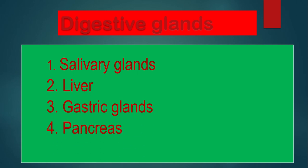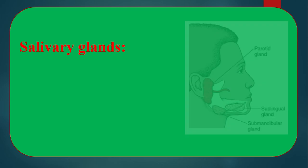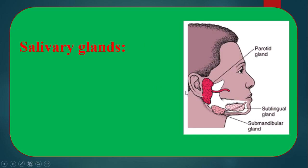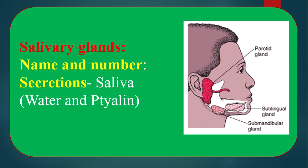The five types are: number one, salivary glands; number two, liver; number three, gastric glands; number four, pancreas; number five, intestinal glands. There are three types of salivary glands: parotid glands, sublingual glands, and submandibular glands. There are two of each, meaning three pairs of salivary glands are located around our buccal cavity or mouth cavity.